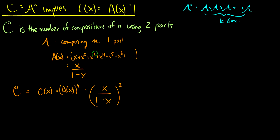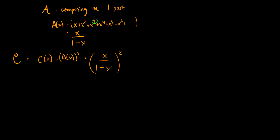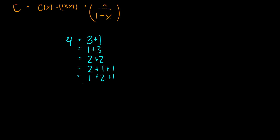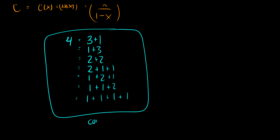So what does a composition look like? Before we did partitions, so let's do compositions of the number 4. You can have 3+1, or 1+3 — and in compositions, order does matter. We can have 2+2, 2+1+1, 1+2+1, 1+1+2, and 1+1+1+1. With partitions, we would not allow the reorderings because order does not matter. So that's what a composition is, and that's the generating function for finding it into n parts.